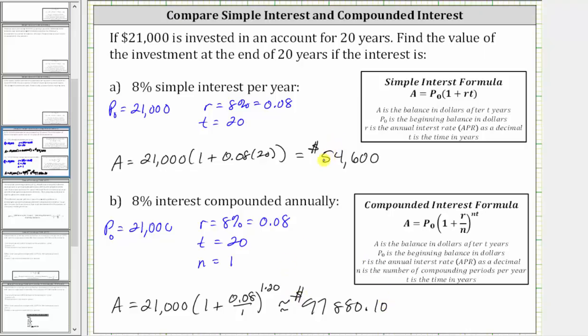You might be surprised by how much larger the balance is with compounded interest, but when we have interest compounded annually, the interest is paid on the increasing balance, not just the beginning balance. Interest is paid on the interest earned year after year for 20 years. I hope you found this helpful.